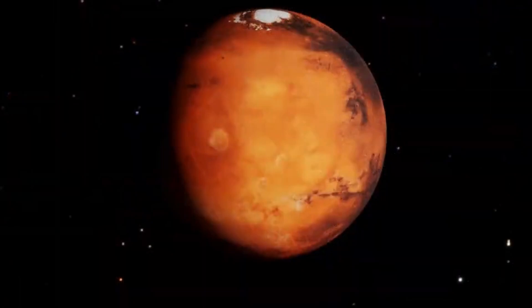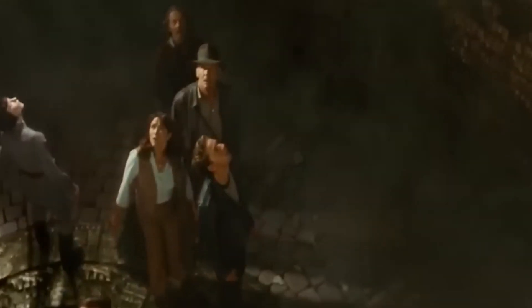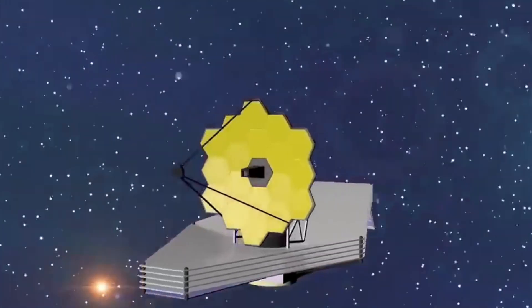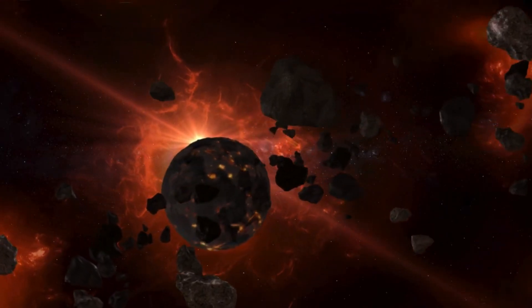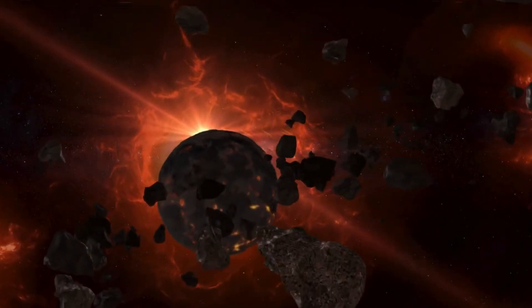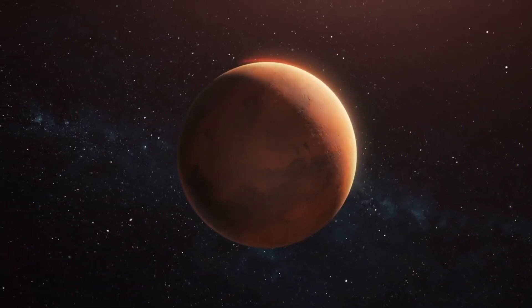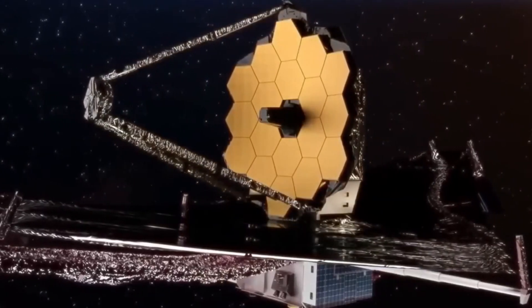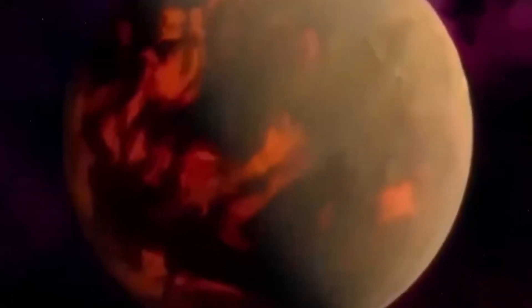This super-Earth exoplanet, orbiting a red dwarf star, holds significant interest due to its potential habitability. Recent research suggests that Proxima b might be tidally locked, with one side in perpetual darkness. However, the prospect of artificial illumination on its dark side raises intriguing possibilities for technological habitability. The discovery of a tentative radio signal from Proxima b's direction has sparked excitement within the scientific community, hinting at the potential for extraterrestrial communication.